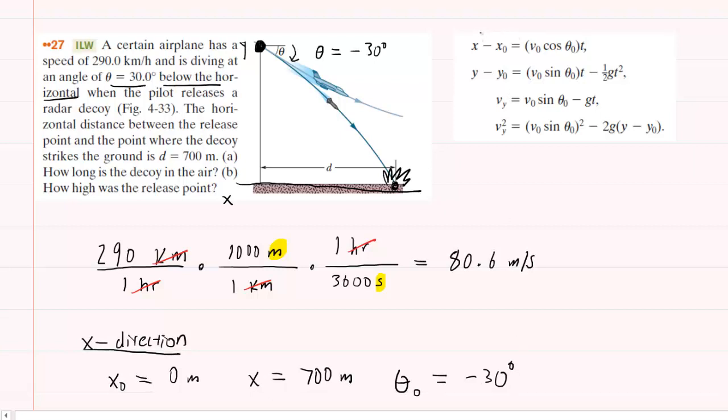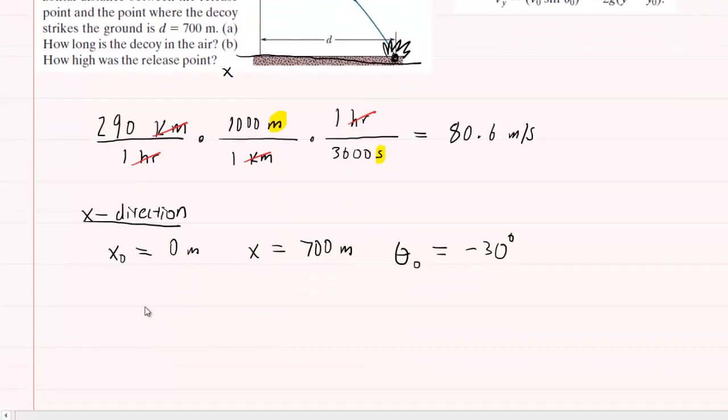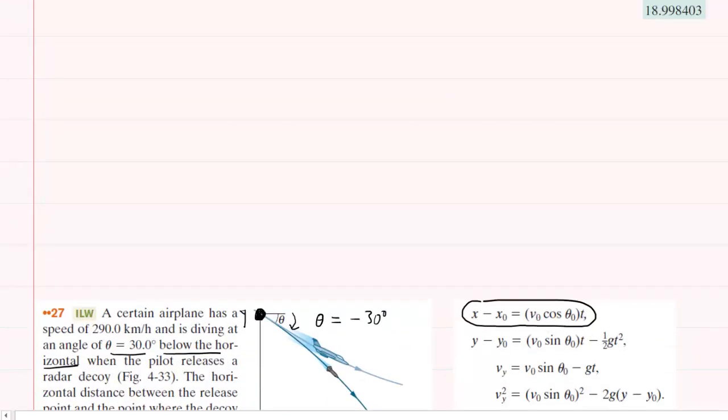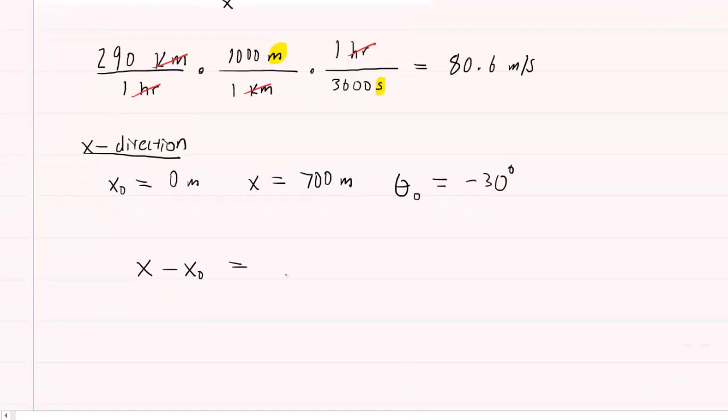Now, that actually is enough information using this equation from projectile motion to calculate the time. So we can come down here and rewrite that equation. x minus x₀ equals, and then if we scroll back up a bit, v₀ cos θ₀ times t.